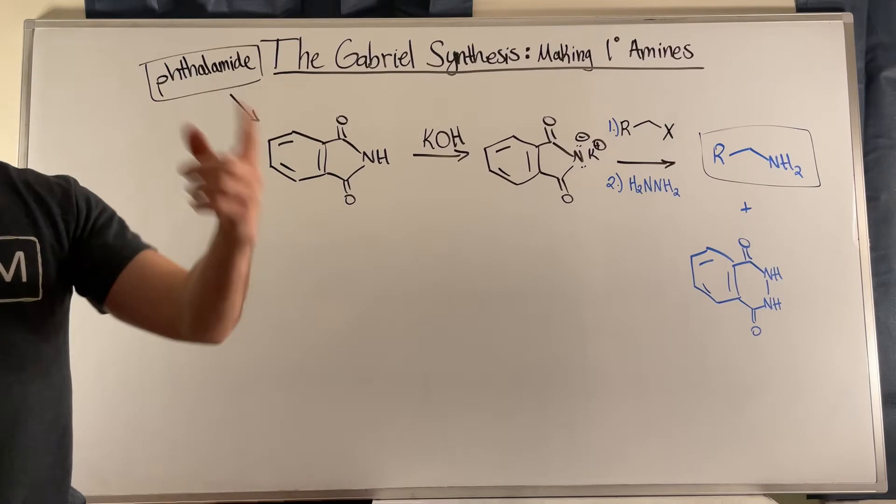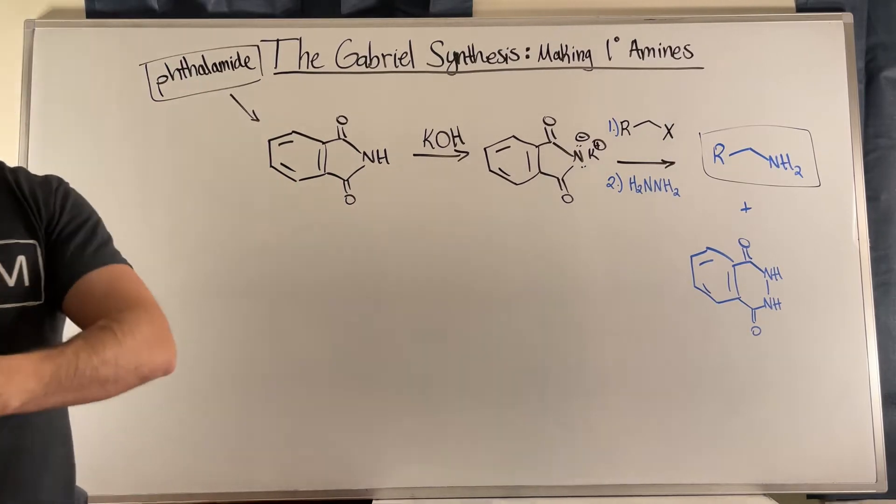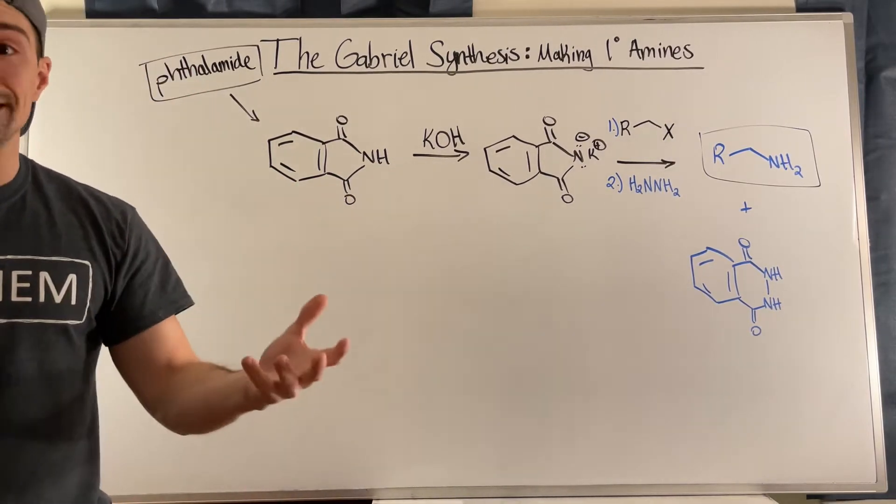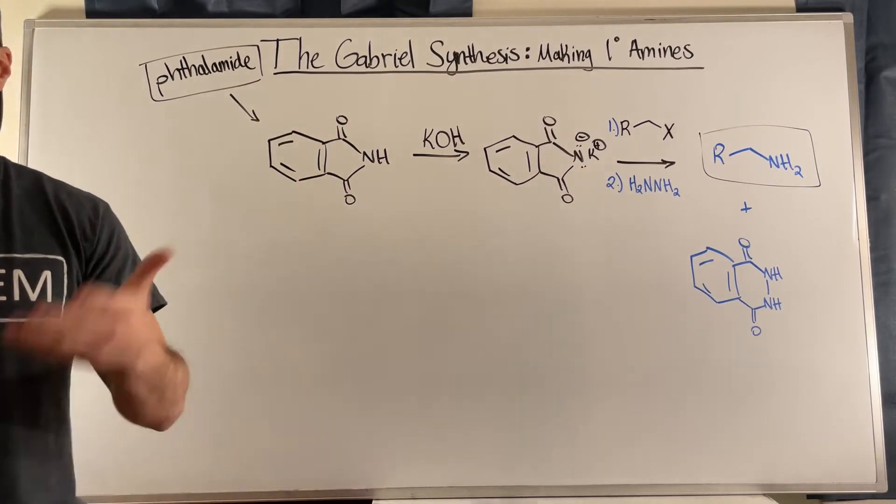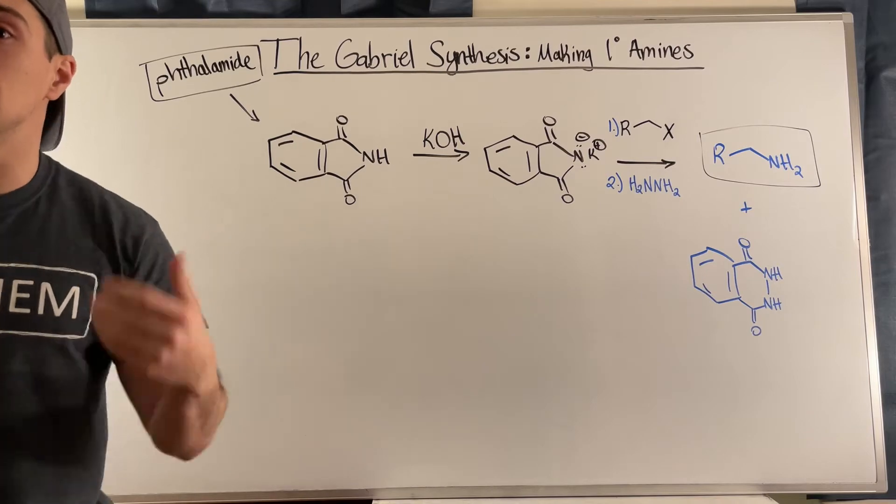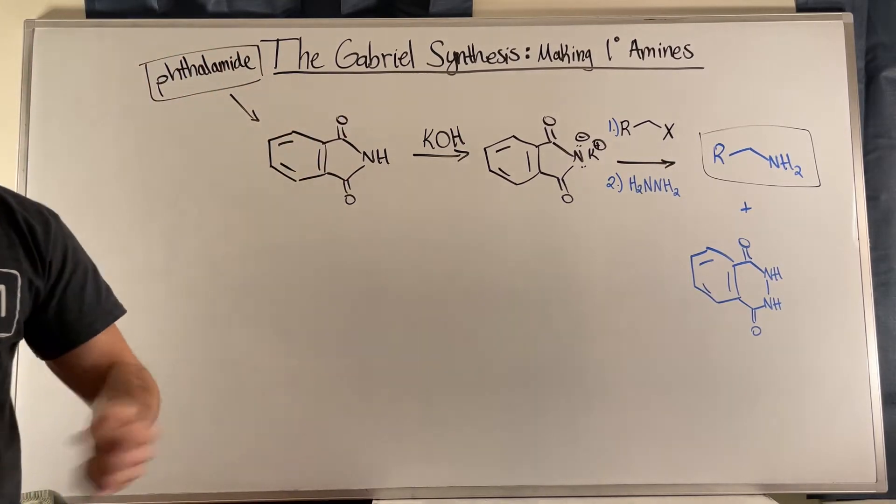If you start with ammonia, if you do SN2, you're probably not just going to get it to go the one time. You're going to actually do SN2 as many times as you can to end up producing an ammonium salt. So this is one method of making primary amines.